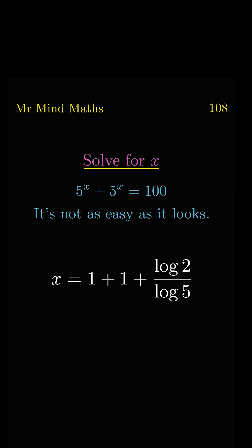And here we will use another log property, so the denominator log will disappear and 5 will become the base of log 2. So finally, we get x equals 2 plus log base 5 of 2, which is the final answer.